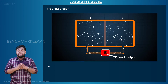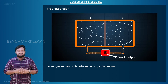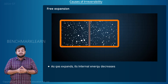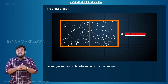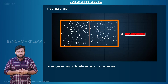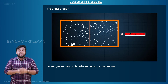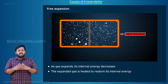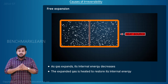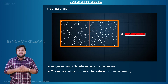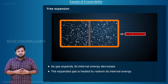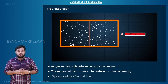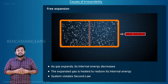According to the first law, the internal energy of the gas decreases. Then we remove the engine. Now to return the gas to the initial state, we have to increase the internal energy of the gas. We heat the gas, thereby increasing the internal energy to the initial value. The system produced some work W by interacting with only one thermal energy reservoir. This is a clear violation of Kelvin-Planck's statement of the second law. So free expansion is irreversible.